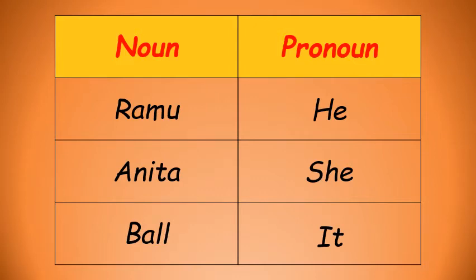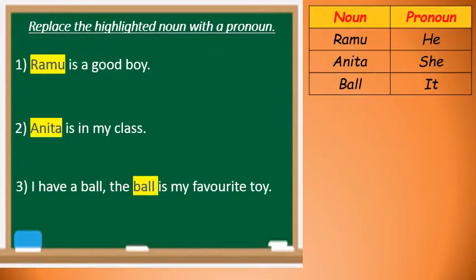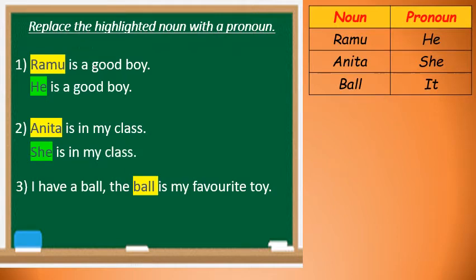Let's understand these words better in a sentence. Replace the highlighted noun with a pronoun, using the same words from the table above. 'Ramu is a good boy' — the highlighted noun here is Ramu. Replacing it with a pronoun: 'He is a good boy.' 'Anita is in my class' — the highlighted noun is Anita. Replacing it: 'She is in my class.' 'I have a ball. The ball is my favorite toy' — the highlighted noun is ball. Replacing it: 'I have a ball. It is my favorite toy.'